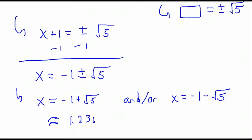You can approximate them with decimals. Rounded to five decimal places, we get 1.23607, and separately for the second solution, it's negative 3.23607, rounded to five decimal places. Remember, those are just rounded solutions — those are not the exact answer. Whenever we're using a calculator to approximate a square root, we are implicitly making an error. The exact solution involves a square root. If we want to round to a certain decimal place, we can.